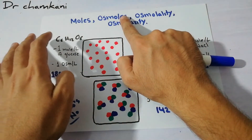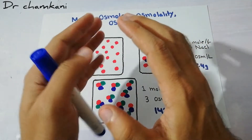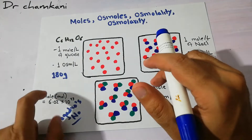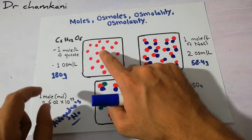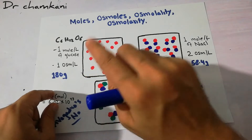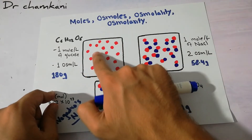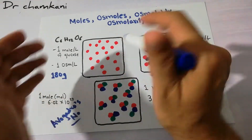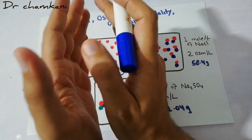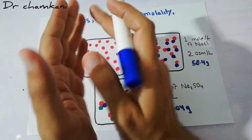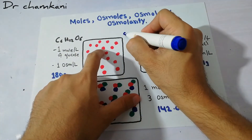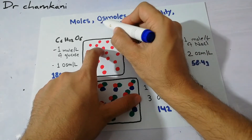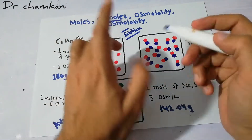Coming to osmol — osmol basically shows the number of osmotically active particles. It is not simply counting the number of particles in one mole. Rather, osmol is the number of active particles in a concentration — when something is present in water in a solution form, the number of osmotically active particles shows the osmoles.